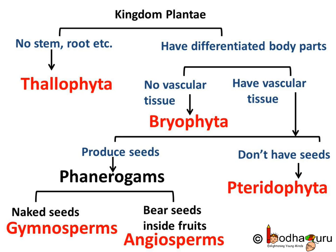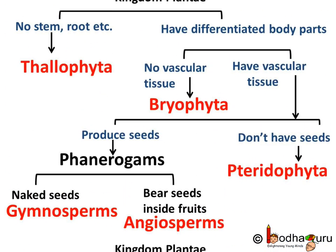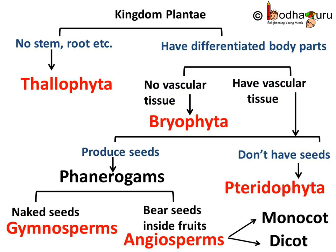And if it bears seeds inside a fruit, it belongs to the division Angiosperm. Lastly, if it is an Angiosperm, we ask: does it have one cotyledon or two? If it has one cotyledon, it is a Monocot — for example, coconut. And if it has two cotyledons, it is a Dicot — for example, mango.